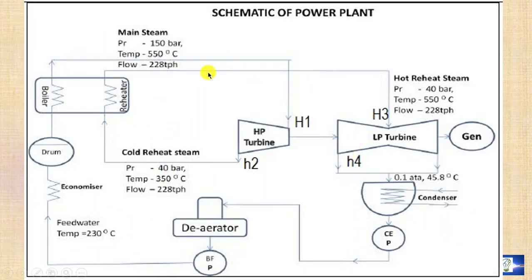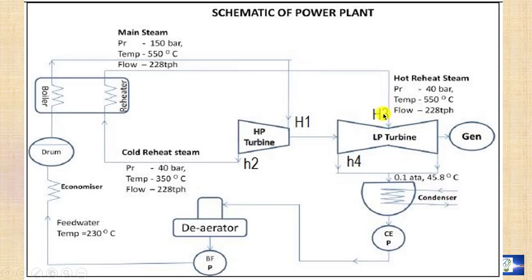This is the schematic diagram of the power plant. The entry point of the HP turbine has enthalpy H1, and the cold reheat point has enthalpy H2. This cold reheat steam, after being reheated, enters the LP turbine with enthalpy H3, and the enthalpy of the LP turbine exhaust is H4.